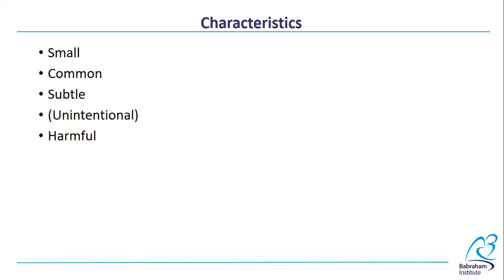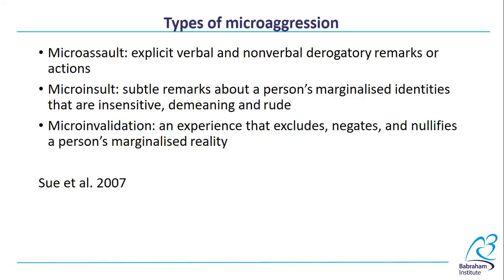Since the term was coined, one of the most prominent researchers in this area is Derald Sue. With his group, he came up with a categorization of three types of microaggressions. Microassault: explicit verbal and nonverbal derogatory remarks or actions. Microinsult: subtle remarks about a person's marginalized identities that are insensitive, demeaning, and rude. Microinvalidation: an experience that excludes, negates, and nullifies a person's marginalized reality. When I go through the examples, it's useful to think about how harm is caused through assault, insult, or invalidation.